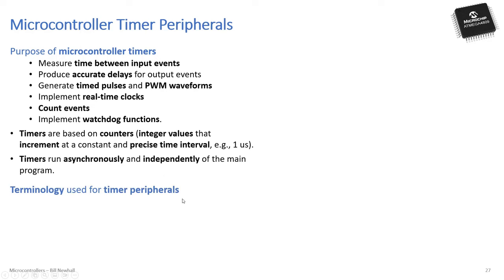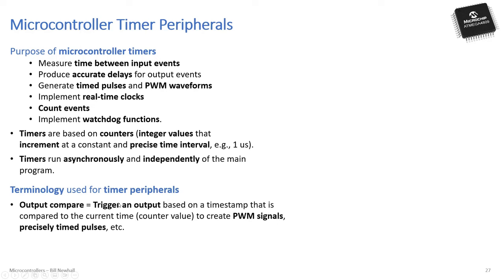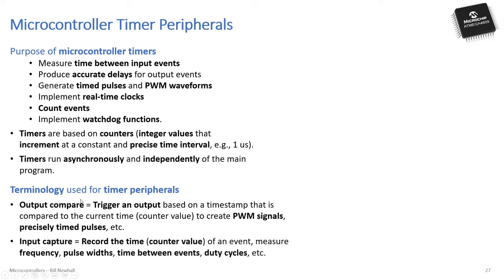Two key terms in timer peripherals: output compare and input capture. Output compare triggers an output — makes something happen — based on a timestamp compared to the current counter value. You use it for PWM signals, precisely timed pulses, or other waveforms. Input capture records the timer value at the moment of an event, used to measure frequency, pulse widths, time between events, or duty cycles.